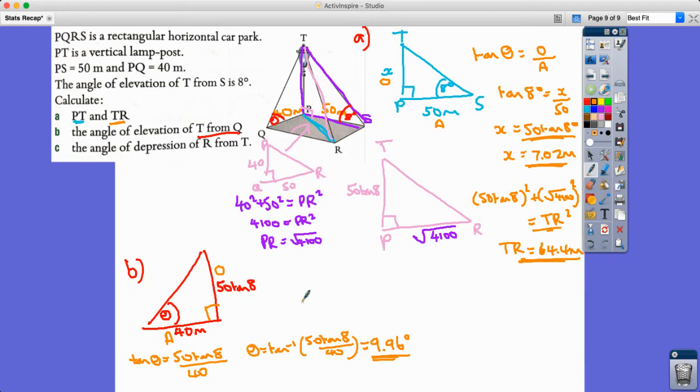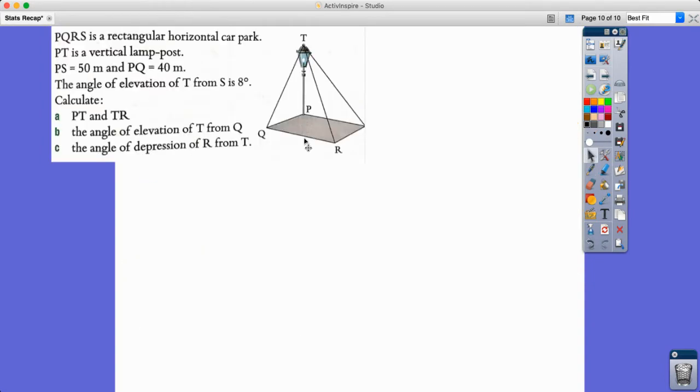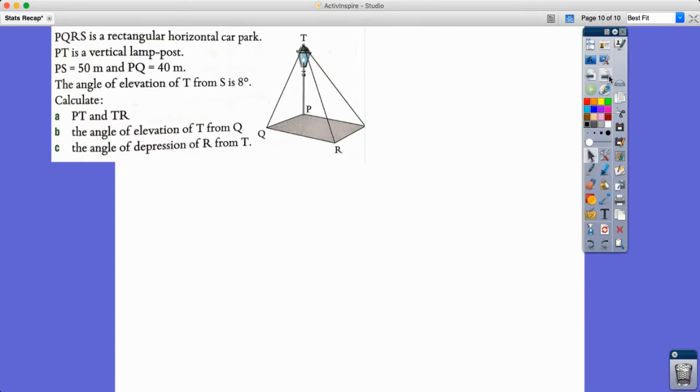All right, now final question—the finale. So all of that was quite a heavy part A there, wasn't it? Part B. You know what, I might just grab a picture of that and go to the next page, give myself a bit of space, because I can always refer back and get some information if I need it from here. Now part C is asking me to find the angle of depression of R from T.